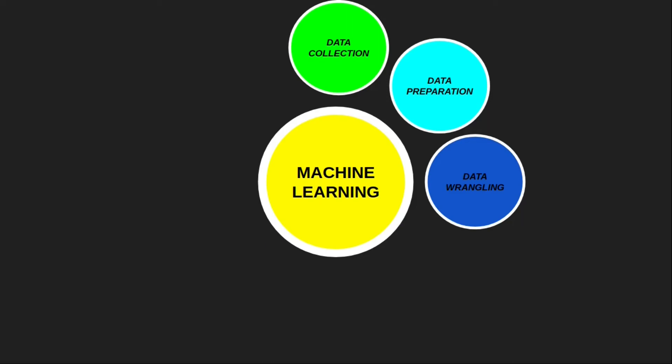Data wrangling is one of the most important steps of the complete life cycle. As we need more quality data, we need to clean the data to remove low-quality data. Not all data we have collected is always of use. In real-world applications, collected data may have various issues including missing values, duplicate data, invalid data, and noise. We need to identify those issues and use various filtering techniques. For example, we can use KNN imputing strategies to fill missing values, and we must remove duplicate data collected from various sources that can cause bias to the model.